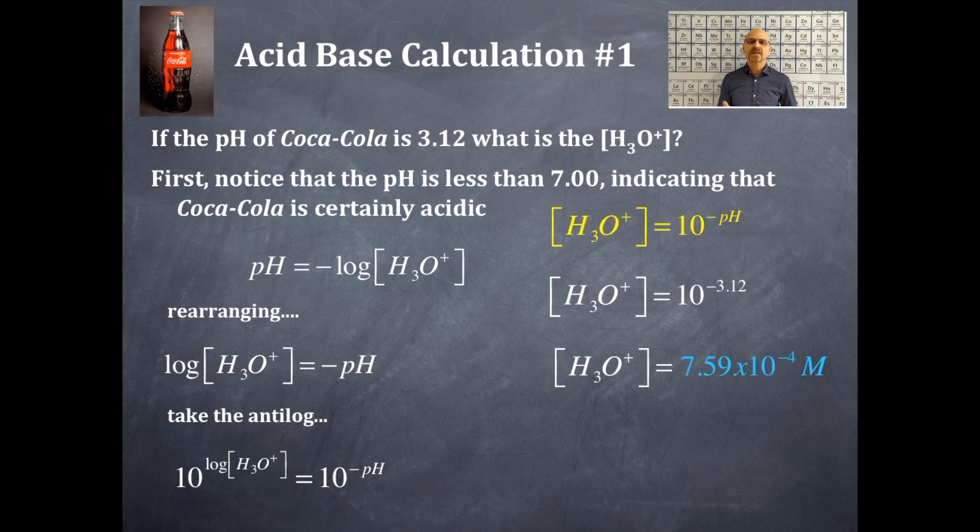Okay. Now, just as an FYI, typically what you will see is that all pHs, all pOHs will have two decimal places. That's why the pH of the Coca-Cola is 3.12.